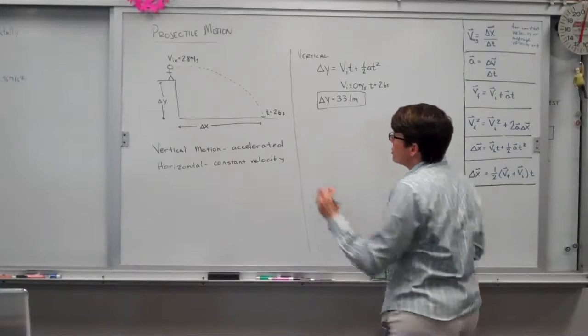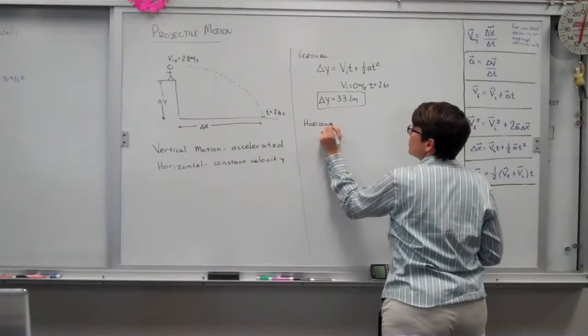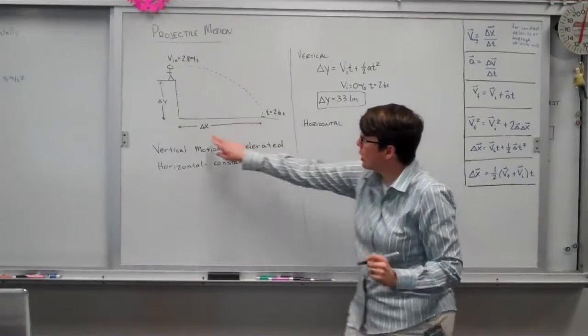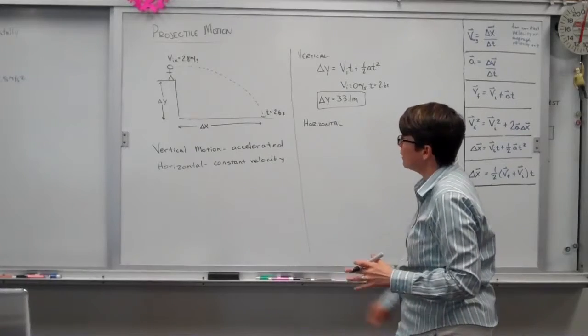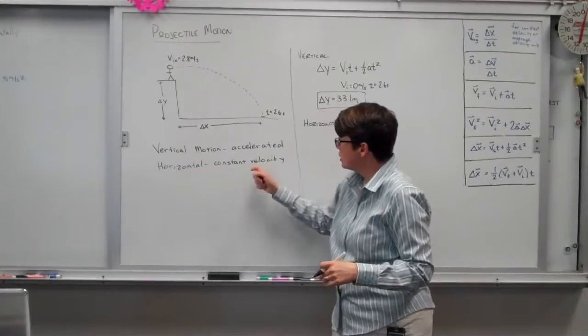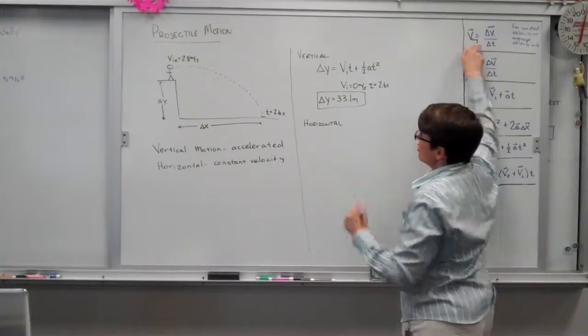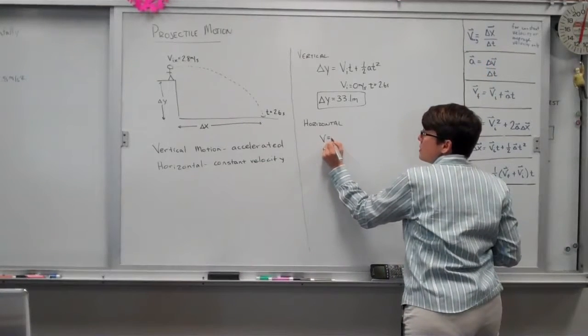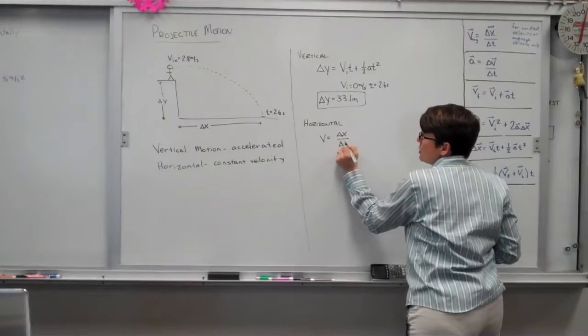Second question has to do with horizontal motion. How far out do you travel from the diving board before you strike the water? In horizontal motion, the velocity is constant. This takes you back to your v average relationship. Your velocity is your change in your position over the change in time.